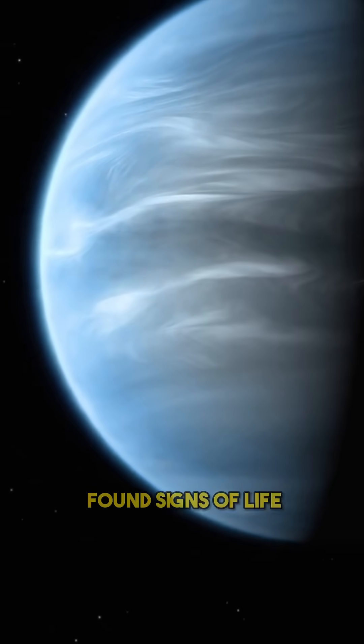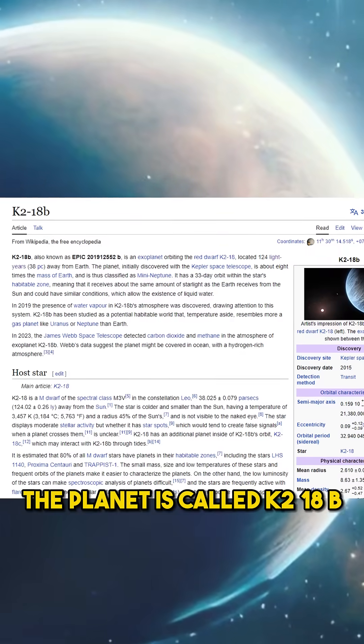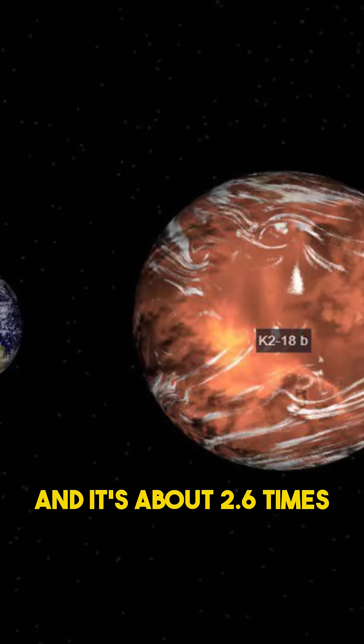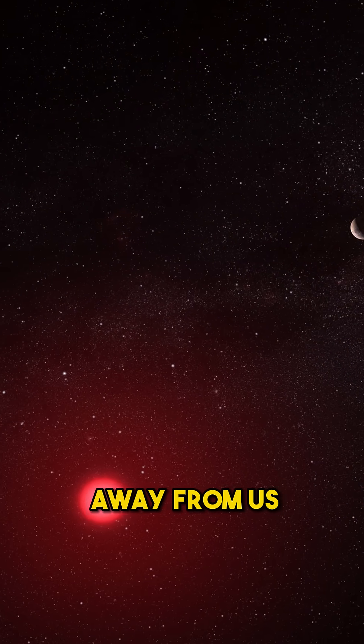Scientists have just found signs of life and intelligence on a planet outside our solar system. The planet is called K2-18b, and it's about 2.6 times the size of Earth, and it orbits a red dwarf star about 124 light-years away from us.